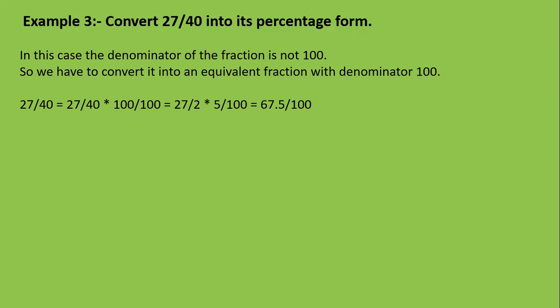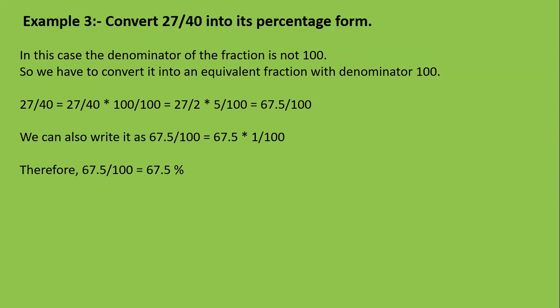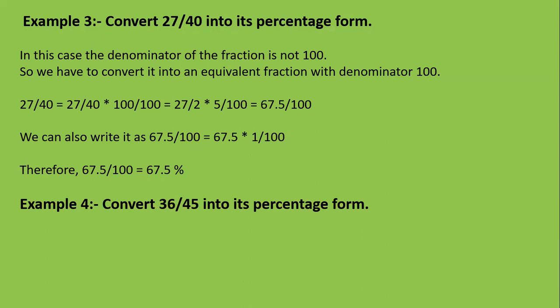So we get 67.5 by 100 as the fractional form. Since 1 by 100 means percent, we can write 67.5 into 1 by 100 as 67.5 percent. So 27 by 40 equals 67.5 percent. Now convert 36 by 45 into its percentage form — pause the video and try it yourself, then match your answer.